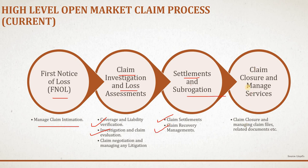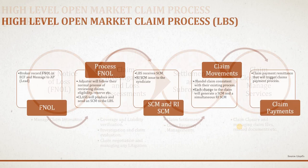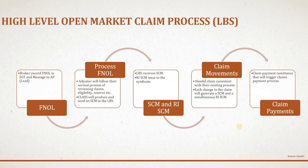Subrogation recovery is followed by the final step: claim closure and management services. Here the claim closure happens, and the managing agent files information to the regulators and the Corporation of Lloyd's in terms of producing reports. This is the current high-level open market claim process, which is very straightforward. Most managing agents follow this process, but they might have slight variations based on their own business processes. Now let's see the high-level open market claim process from the LBS point of view.